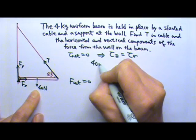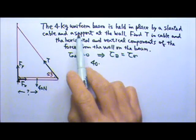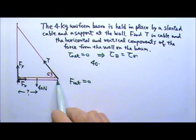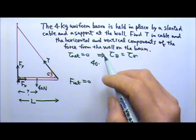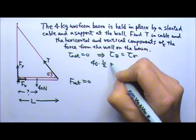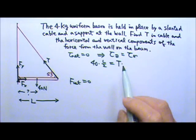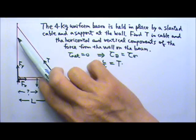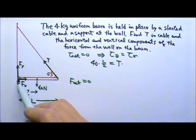The clockwise torque will be produced by Mg, which is 40 newtons. Now what is the lever arm? The lever arm is the distance between this line of force and the axis. The problem didn't give us anything about the length of the beam, which means the length of the beam probably does not matter. So we can just say the length of the beam is L and hopefully L will cancel. That means the lever arm for the 40 newtons would be half L. This should equal the counterclockwise torque, which is produced by the tension — tension times the lever arm. The lever arm is the perpendicular distance between this line and this dot.